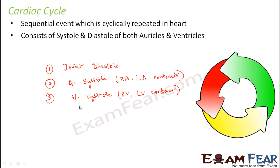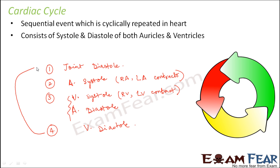When the ventricular systole takes place, the auricular diastole also takes place simultaneously. This is again followed by ventricular diastole — the ventricles relax — which in turn leads to joint diastole, where both auricles and ventricles relax. This cycle of events keeps on happening continuously, and this is known as the cardiac cycle.